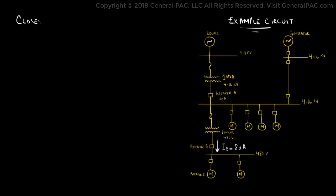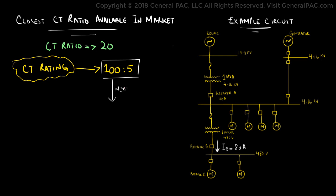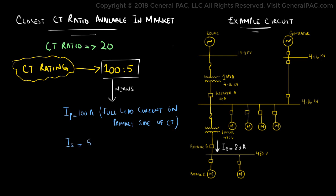Practically speaking, the closest CT ratio available to our calculated value is 20, which means that a current transformer with the ratings of 100 to 5 should be applicable for our example. The 100 to 5 ratio means that we are expecting 100 amps of full load current on the primary side, which is equivalent to 5 amps of full load current on the secondary side.